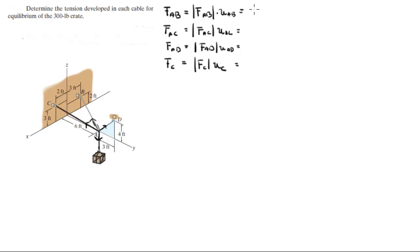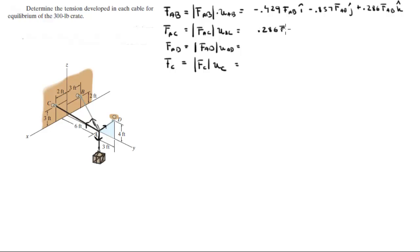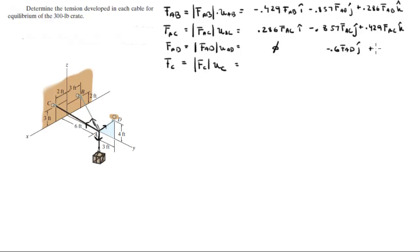Writing out the Cartesian vector forms: FAB = (−0.429 FAB)i + (−0.857 FAB)j + (0.286 FAB)k. FAC = (0.286 FAC)i + (−0.857 FAC)j + (0.429 FAC)k. FAD = (0)i + (0.6 FAD)j + (0.8 FAD)k. Please try to be as neat as possible — your paper will fill with numbers and it's easy to make mistakes.